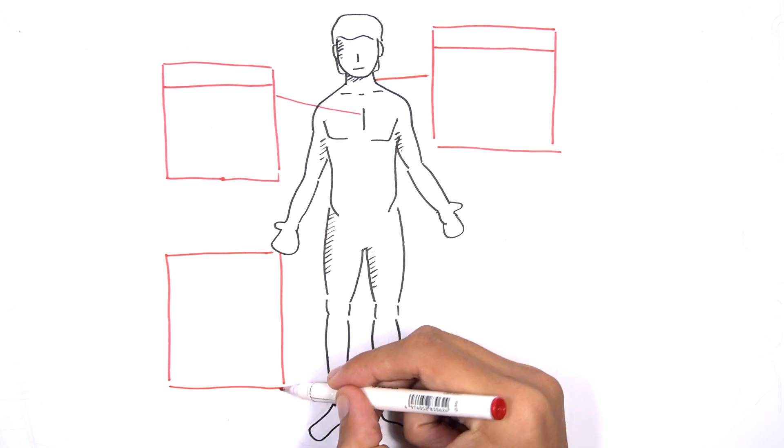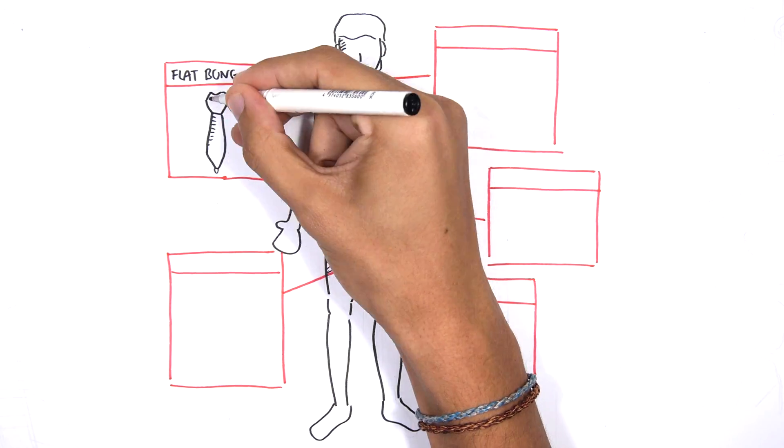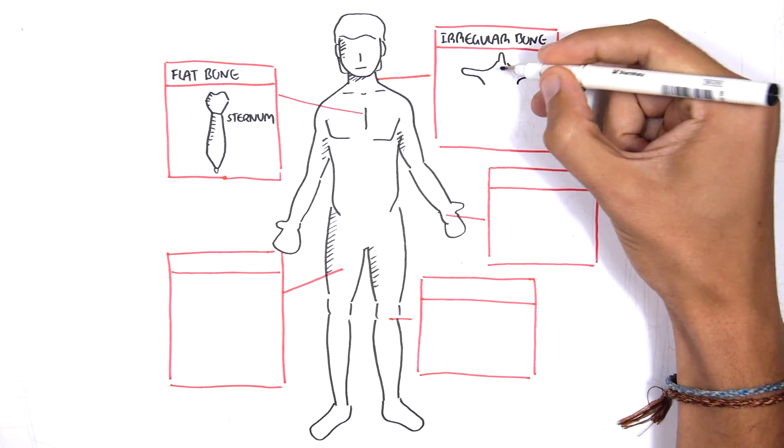We have many different types of bones in our body with all shapes and sizes. We have flat bones such as the sternum, irregular bones such as the vertebrae.